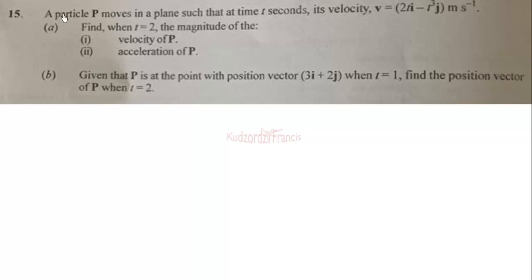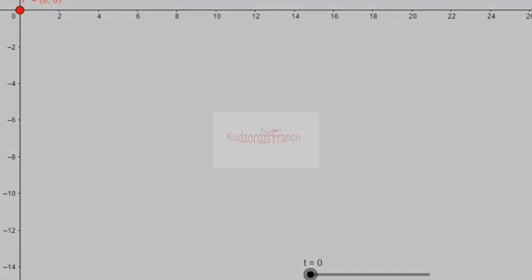This is the 2020 elective mathematics question 15. A particle P moves in a plane such that at time t seconds, its velocity v equals 2ti minus t-cubed j meters per second. Part (a): find at t equals 2 the magnitude of the velocity of P, and (ii) the acceleration of P. Part (b): given that P is at a point with position vector 3i plus 2j when t equals 1, find the position vector of P when t equals 2.